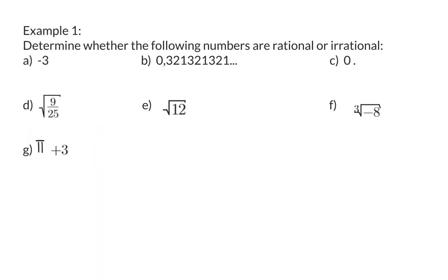Example 1. Determine whether the following numbers are rational or irrational numbers. Minus 3 is definitely a rational number.